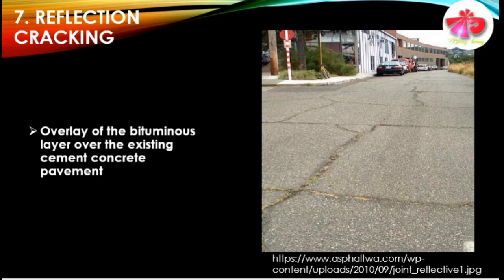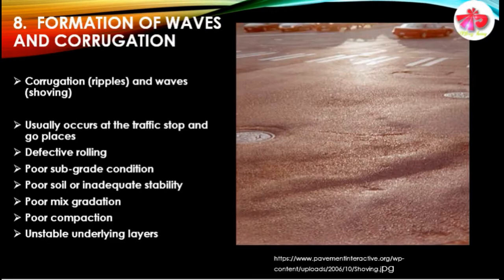The seventh typical failure pattern in the flexible pavement is reflection cracking. This type of cracking is observed in bituminous overlays provided over existing cement concrete pavements; the crack pattern in the existing cement concrete is reflected on the bituminous surfacing in the same pattern. There is no much influence on the structural action of the total pavement section, but seepage of water through the cracks causes damage to the subgrade soil and results in mud pumping type of failure.